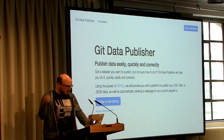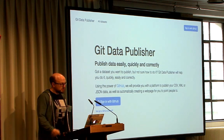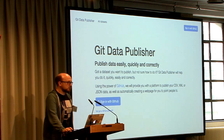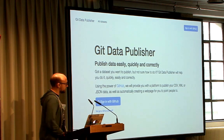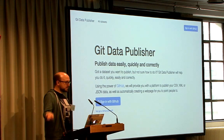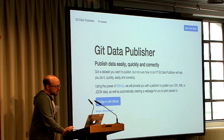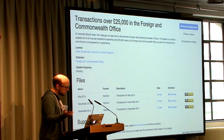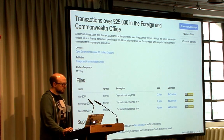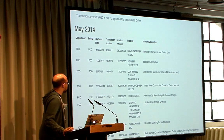Some of the things we've worked on — this is Git Data Publisher. It gives non-technical people the ability to publish data sets on GitHub, fill out a quick form, fill out some metadata, add the data sets. As well as publishing on GitHub, it uses GitHub Pages underneath the hood to automatically create human-readable web pages with machine-readable metadata underneath, as well as doing data previews.